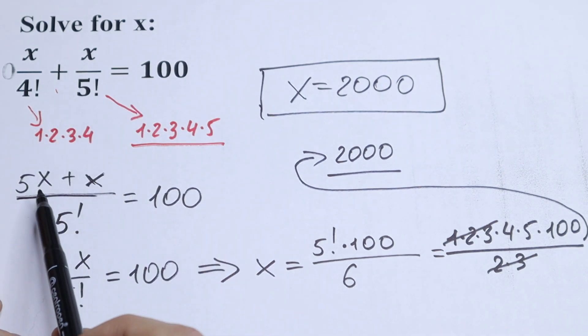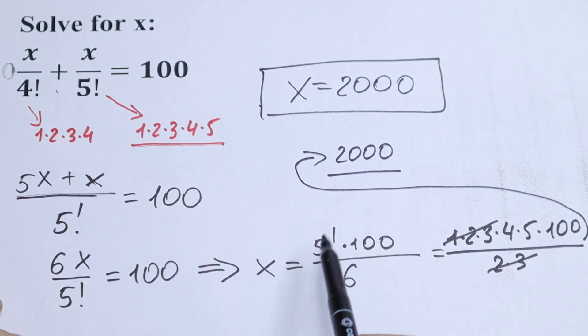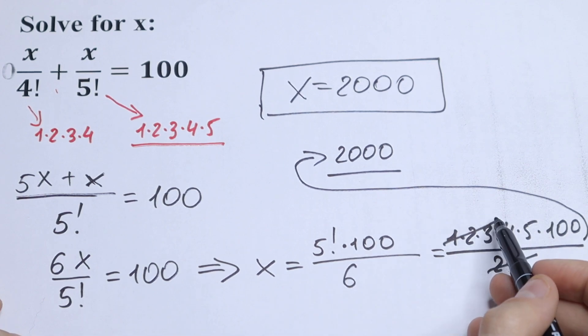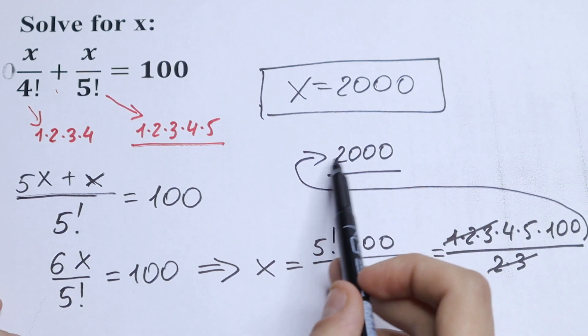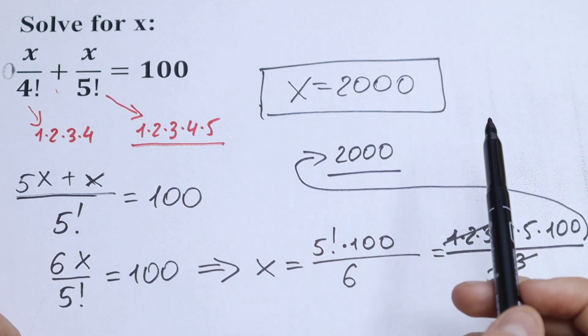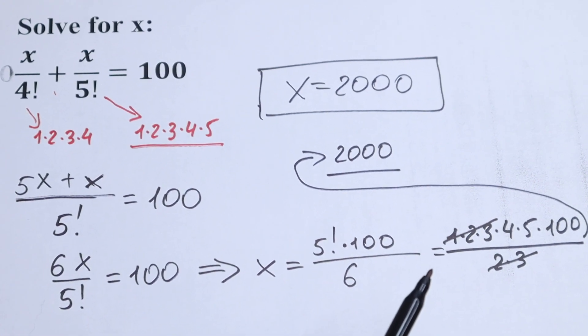Finding the common denominator, simplifying, writing the factorial as a product, and canceling with the 6 which is 2 times 3. We can cancel and simply multiply at the end to get x equals 2000.